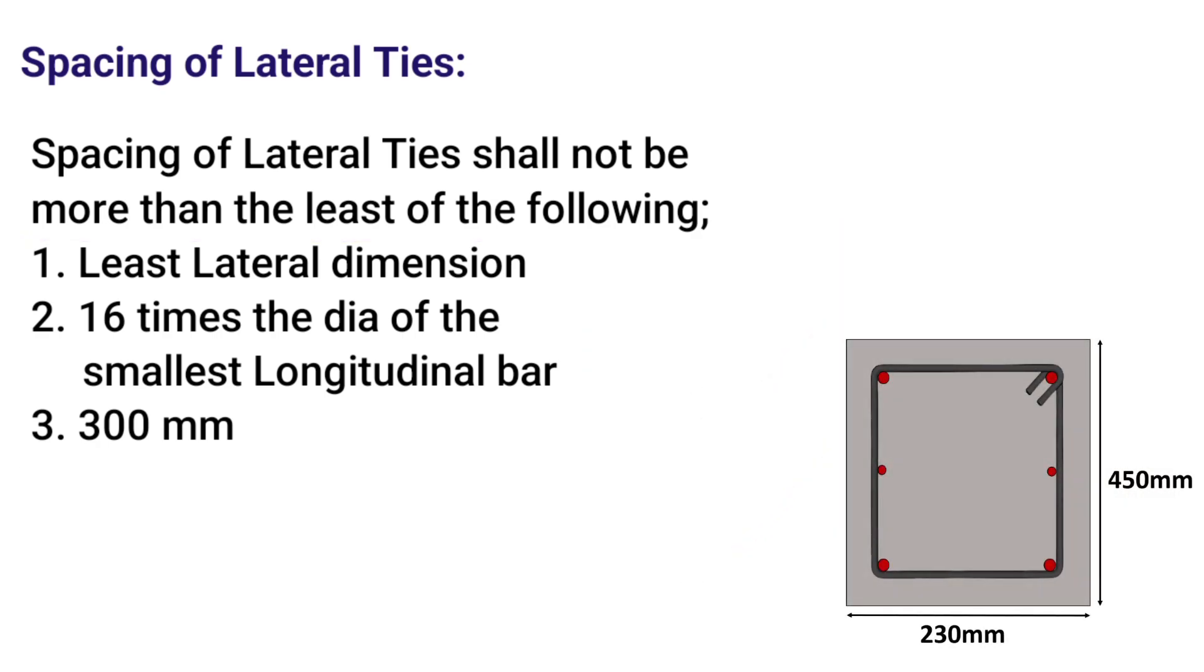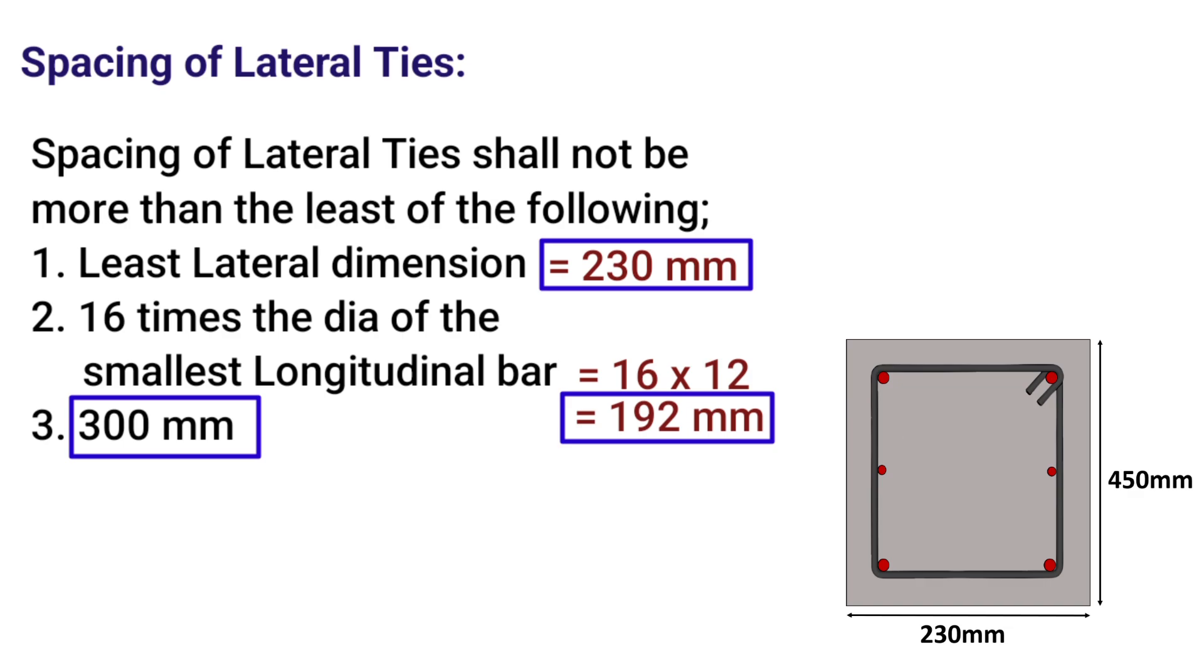For illustration, if we have a column of size 230 x 450 mm with 4 number of 16 mm bars and 2 number of 12 mm bars, its least lateral dimension would be equal to 230 mm, 16 times d will be equal to 16 x 12 which will be equal to 192 mm. And the third criteria is 300 mm. If we compare all the three criteria, 192 mm is the least among all. Hence, we can provide a spacing of 192 mm.